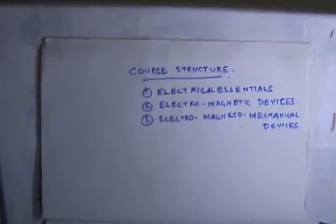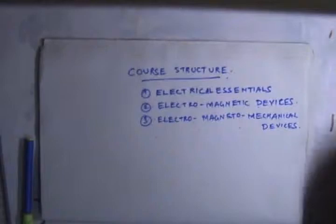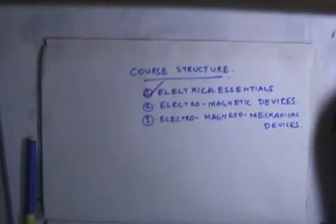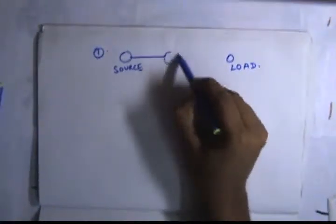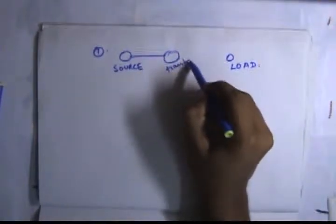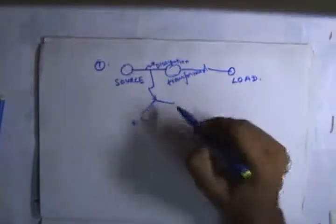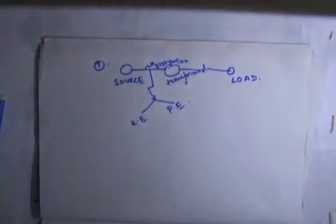Going into the subjects, in Electrical Essentials we are going to discuss the source, the load, how energy gets transformed, how some amount of source energy or power is dissipated, and how some amount of energy is being stored. Source energy is stored as kinetic energy and potential energy. The diagram shows the source, the load, and how it gets transformed.